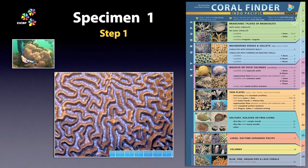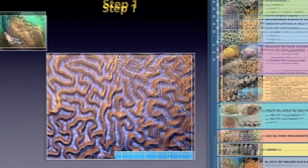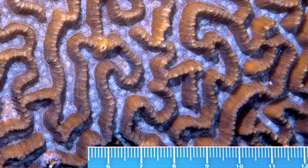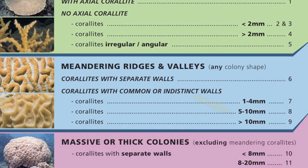Specimen 1. From the wide shot, we can see Specimen 1 is a large and massive coral. The coralites have sinuous meanders and share common walls. To choose a lookalike page, we'll need to measure the valley width of the coralites — they average approximately 6 millimetres. So let's try lookalike page 8.